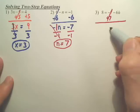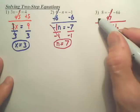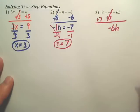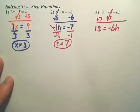That's gone. I'm going to bring down the 6h, negative. Oh, if I add 7 here, I've got to add 7 on this side. That gives me 15 equals negative 6h.